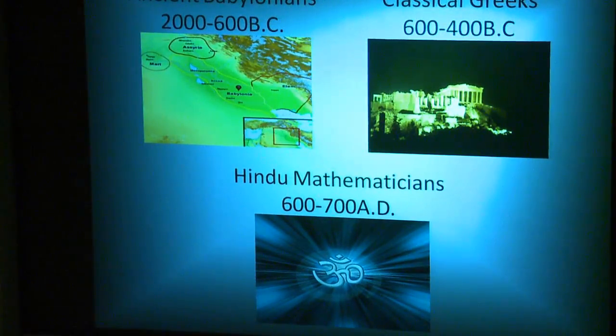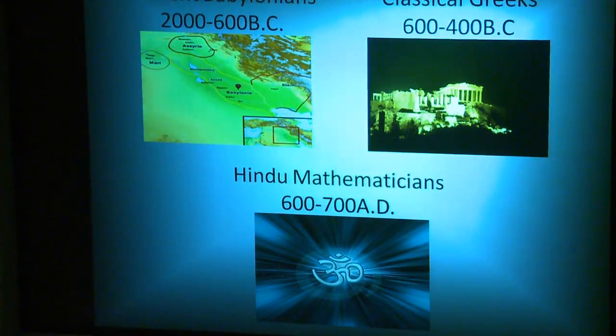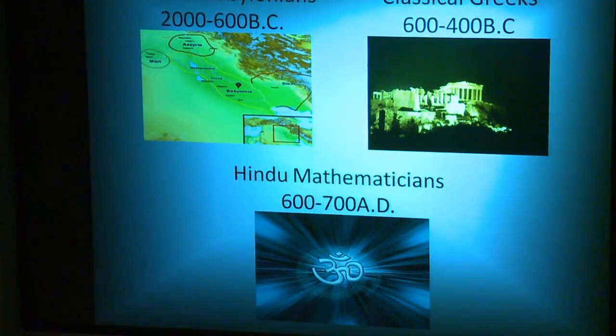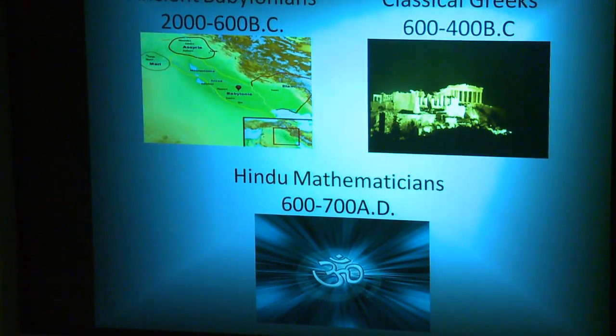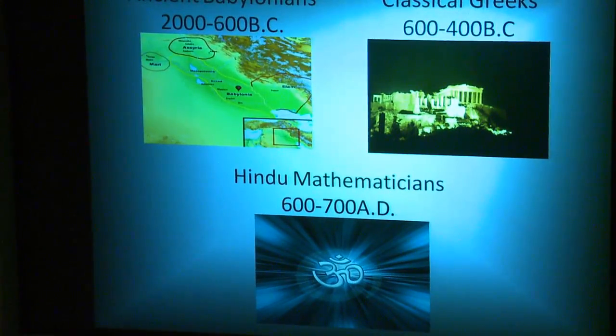The ancient Babylonians, classical Greeks, and 7th century Hindu mathematicians knew how to solve different types of quadratic equations. It is not until 500 years later that a complete solution is worked out.